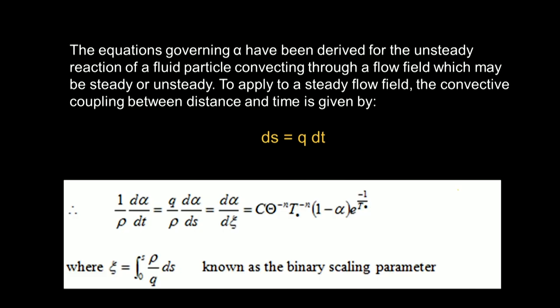Well, the distance you travel in a time increment is your velocity times your time. So it's a very simple transformation to go from time to displacement. So this is our original formulation of the chemical kinetic equation. We can replace dτ by dT with q dτ by dS. And we have the rate of dissociation in terms of this parameter here, which is known as the binary scaling parameter, which is the integral of rho over q along the line of path the particle is moving. It basically is a parameter that tells you the total amount of reaction that can take place.